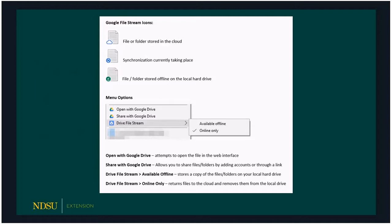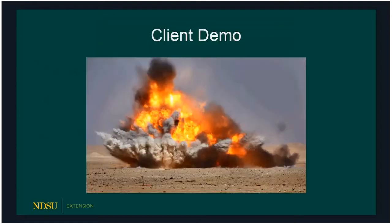The menu options for Google File Stream include 'Open with Google Drive,' which opens a web browser just like OneDrive does. 'Share with Google Drive' opens an interface where you can define who you want to share with — put in an email address, create a link, similar to OneDrive. The final options are 'Available Offline' or 'Online Only' — just like OneDrive, you can specify which files to keep on your computer for travel or frequent use versus files you just want to store online to free up hard drive space.